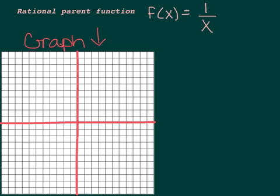We're going to start by graphing the rational parent function, which is f of x equals 1 over x — the most basic parent function that we have for a rational.